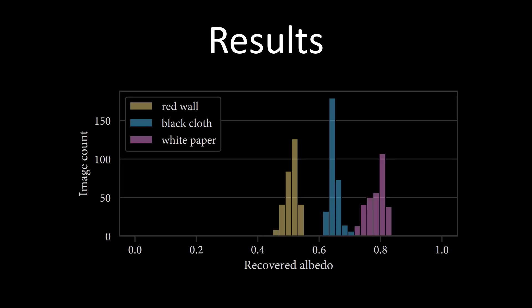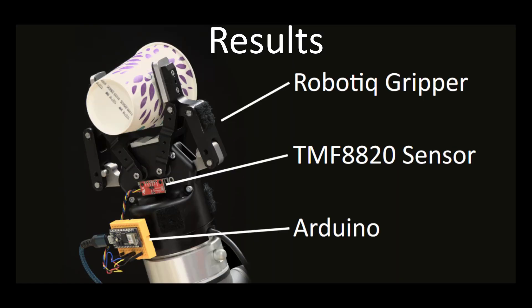We use differentiable rendering to recover surface albedo, and find that recovered albedo is consistent regardless of the angle of incidence or distance to the surface, enabling differentiation between three surfaces using a single sensor measurement.